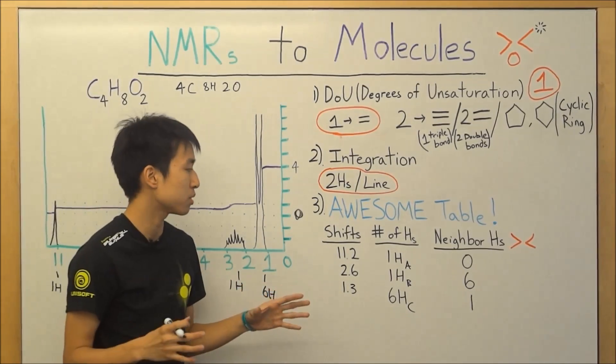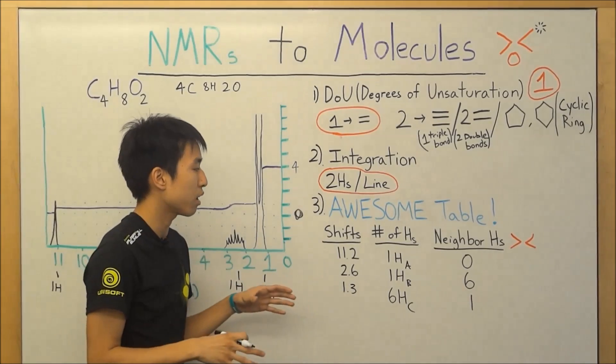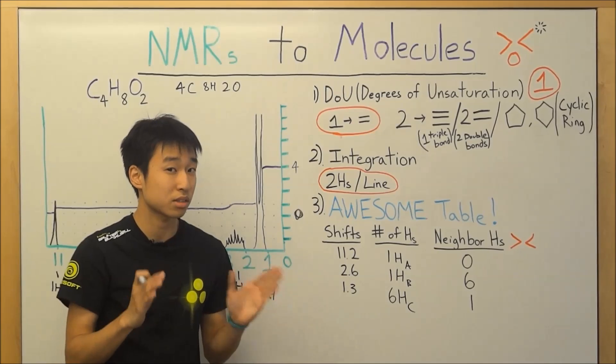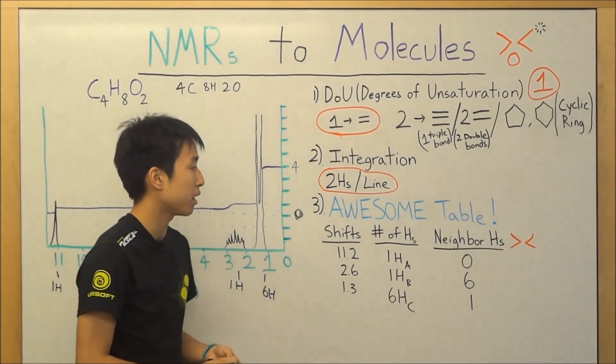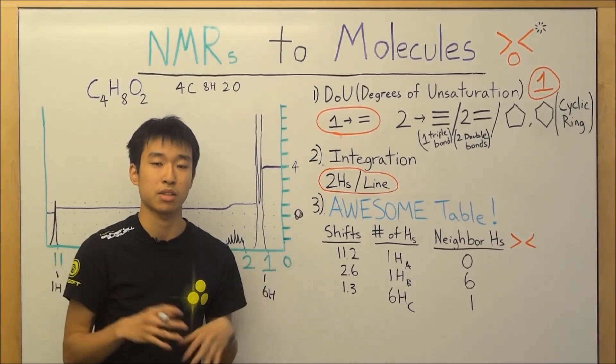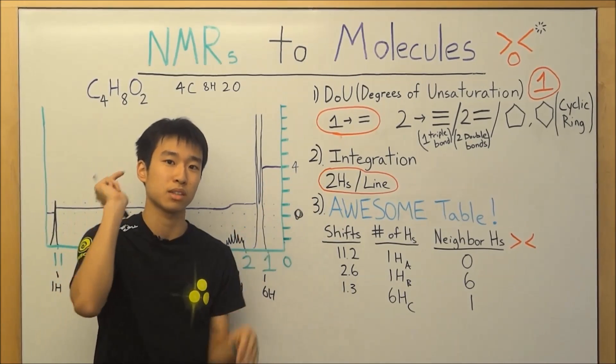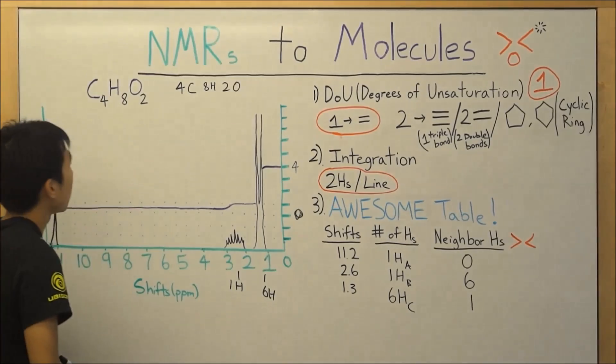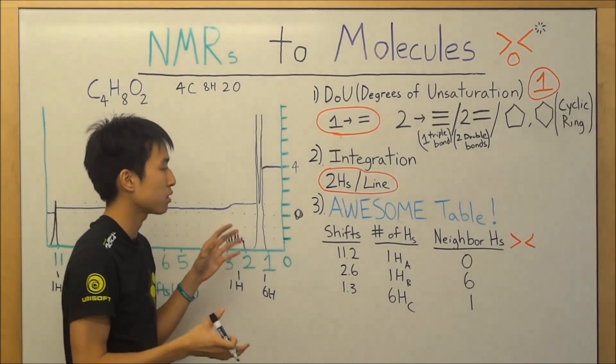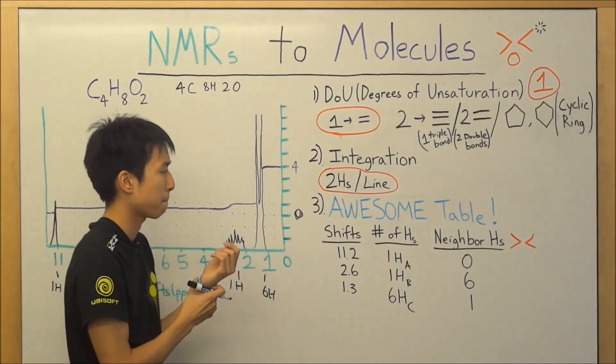For example, a methyl group, right? Methyl group hydrogens. They're usually at 0.8 to 1.6 if it's really deshielded. But if you guys don't have the shift table, I have the link down below. And I'm probably going to make an annotation right here, in front of my face, so you guys can click on that. So why don't we start with the extremes? That usually helps us the most when we want to figure out the structure.